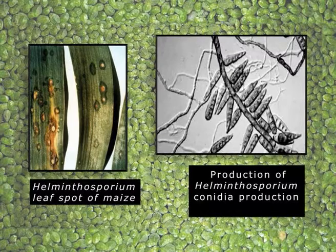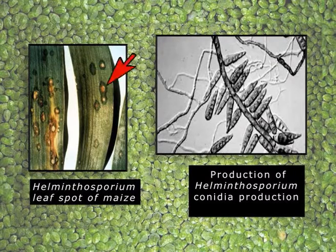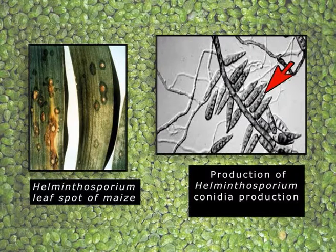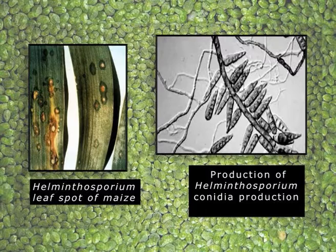Similarly, there may be Helminthosporium, another common pathogenic fungi causing leaf spot of maize. Here it is a specific soaked region with a yellowish core, produced by specific Helminthosporium conidia. These conidia can be spindle-shaped with a pointed end, and these are the different individual cells of the Helminthosporium conidia. There may be another one which is commonly called Colletotrichum.